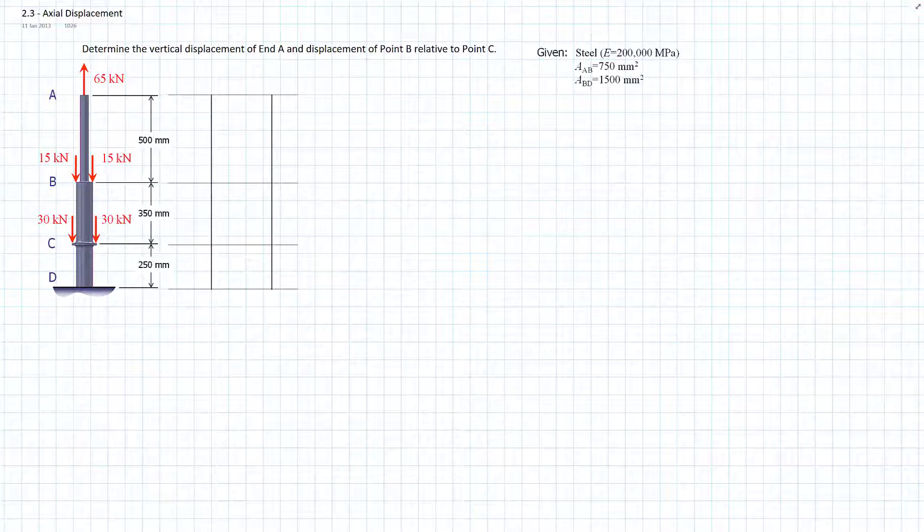At the same time we also want to demonstrate relative displacement. We're going to say how much does point B move relative to point C. It's steel so we have 200,000 megapascal material and we have two areas for the two different steps shown there.